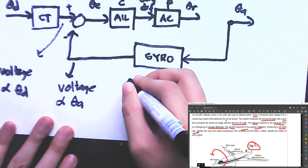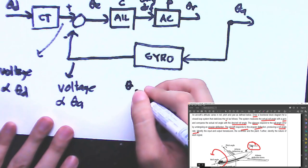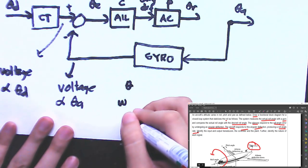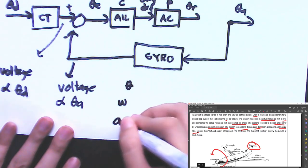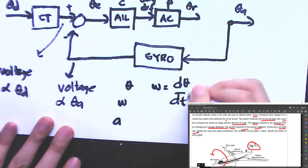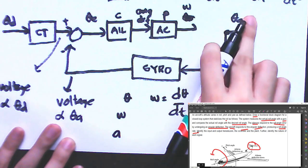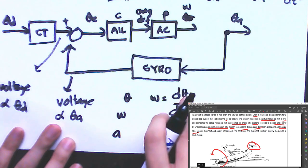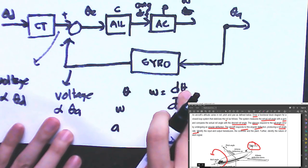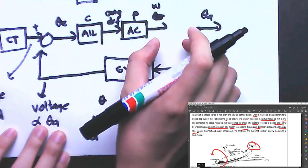In angular motion: θ is angular position, ω is angular velocity or speed, and α is angular acceleration. Angular speed is the rate of change of angular position. So θ is basically the integral of ω with respect to time. To get θ from ω, we need to integrate.